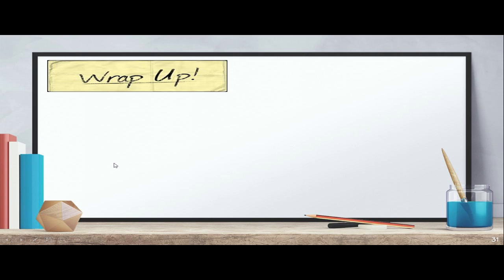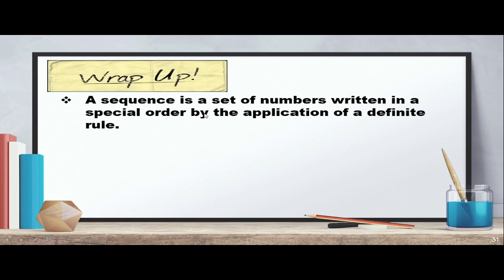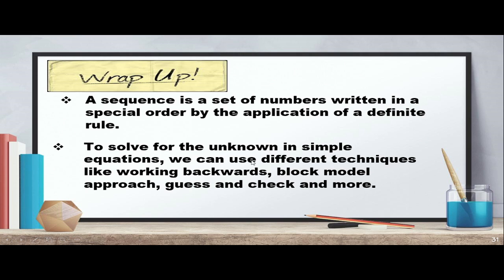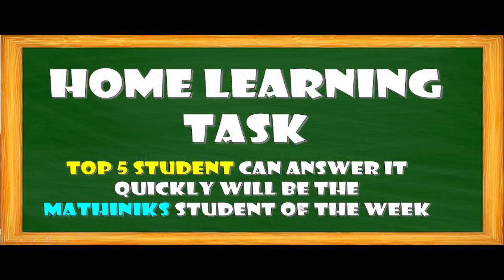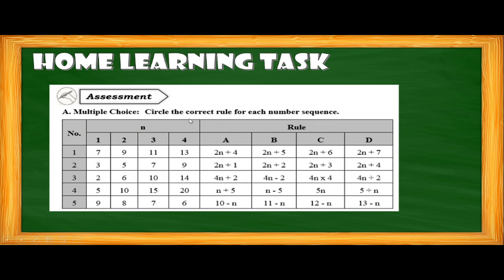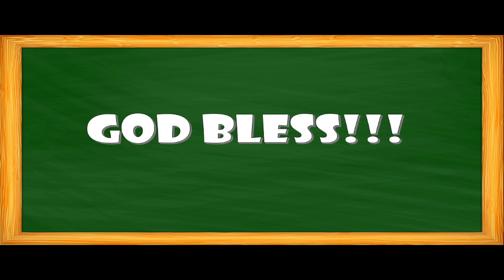Wrap-up: A sequence is a set of numbers written in a special order by application of a definite rule. To solve for the unknown in simple equations, we can use different techniques like working backward, block model approach, and guess and check. For our home learning task, answer the multiple-choice assessment: circle the correct rule for each number sequence. That's all for today — thank you and God bless.